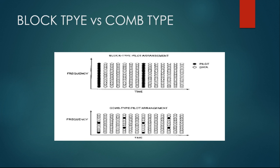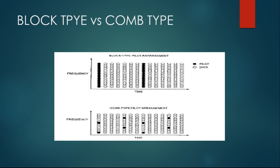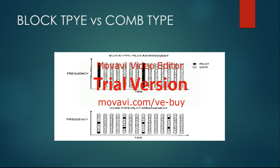In comb-type pilot insertion, you add the pilot signal at particular intervals during the data transmission. The difference is that in block-type pilot insertion the operation is simple — you add the pilot at the beginning of the subcarrier and transfer the data. In comb-type, you add the pilot signal at a particular interval, so you need to stop the data transmission, add the pilot signal, and then transfer the data again, which is a more complex process.